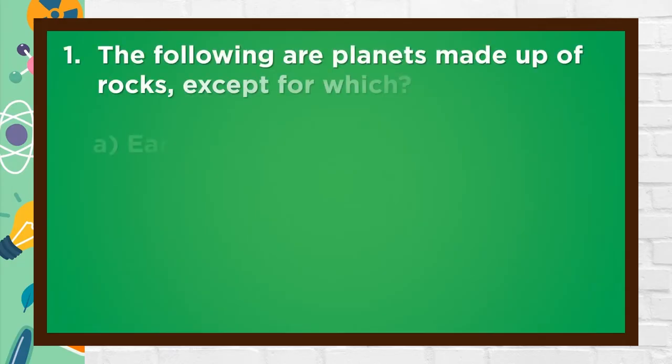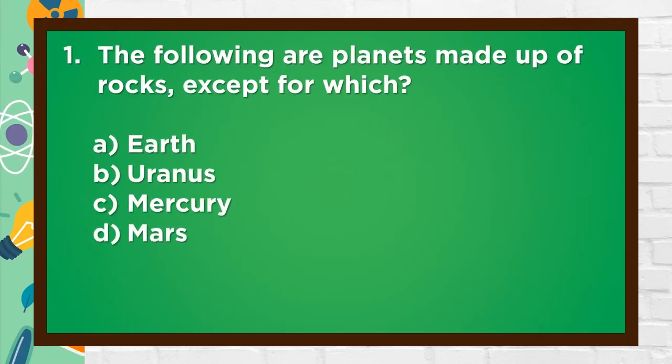Number 1. The following are planets made up of rocks, except for which? A. Earth, B. Uranus, C. Mercury, D. Mars. The answer is B. Uranus